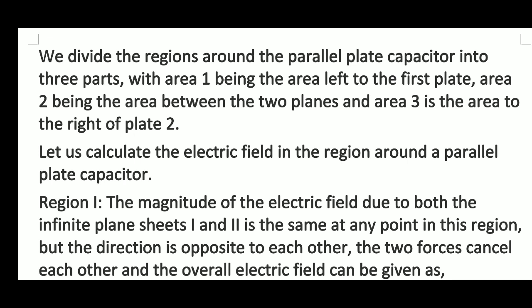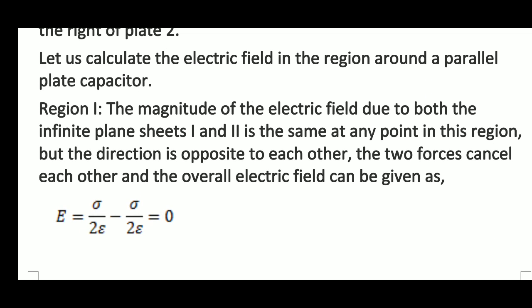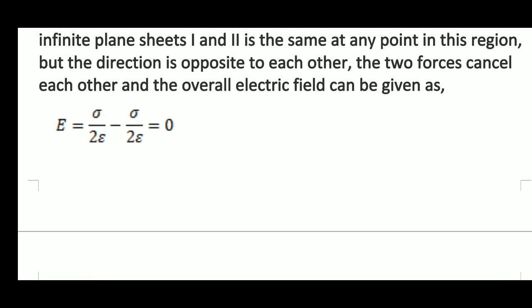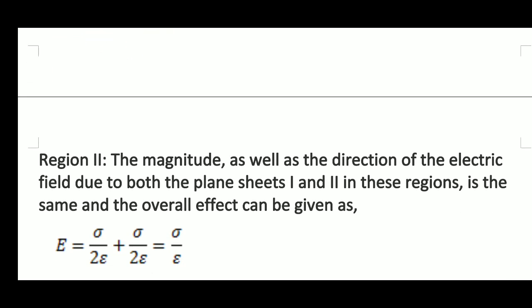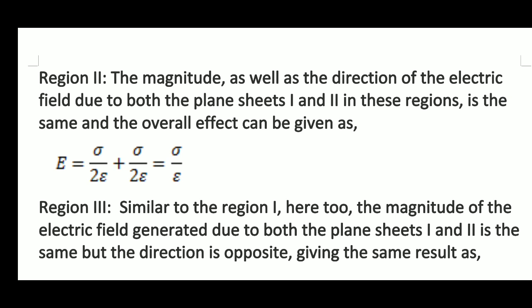In region one, the magnitude of electric field due to both infinite plane sheets is the same at any point but the direction is opposite, so the two fields cancel each other and the overall electric field is sigma upon 2 epsilon nought minus sigma upon 2 epsilon nought, which equals zero. In region two, between the plates, the magnitude as well as direction of electric field due to both plates is the same, giving sigma upon 2 epsilon nought plus sigma upon 2 epsilon nought, which equals sigma upon epsilon nought.